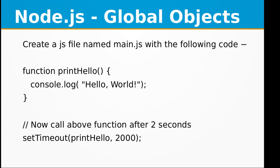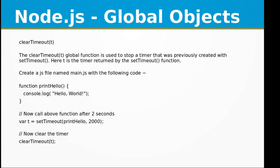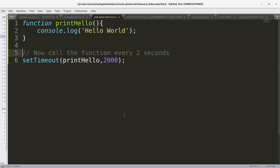The next global function is clearTimeout. It is used to stop a timer that was previously created with setTimeout. Here, t is the timer returned by the setTimeout function. Let's create a file using the same printHello function we created previously.